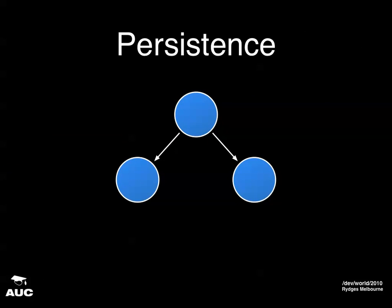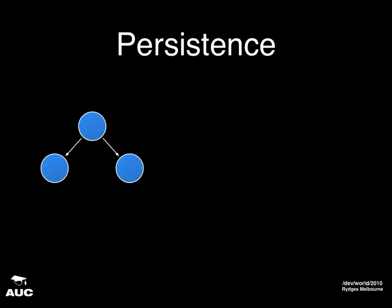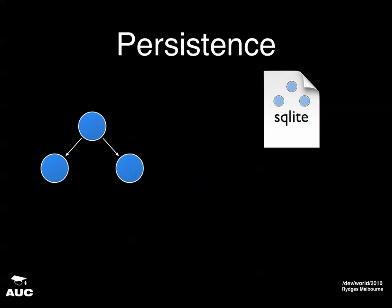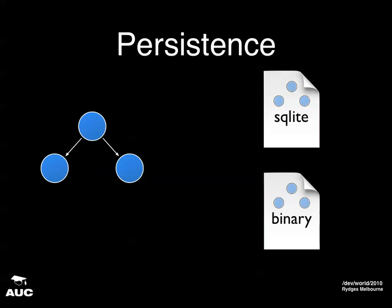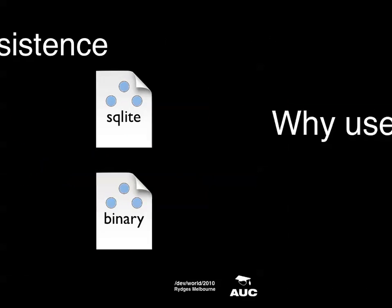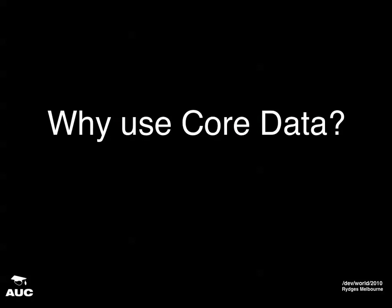Moving on to what most people know core data for: persistence. Core data allows you to persist your object graph to a persistent store. You can use SQLite or a binary persistent store on iOS. On desktop Mac there's also an XML persistent store, which is not available on iOS at the moment. I'm happy to take questions throughout the presentation — feel free to put up your hand, or there'll be time for questions at the end.